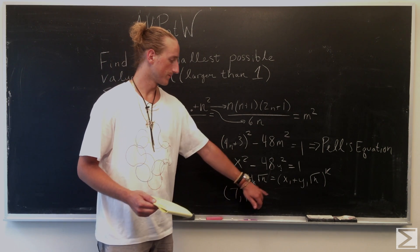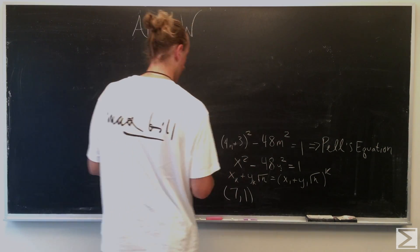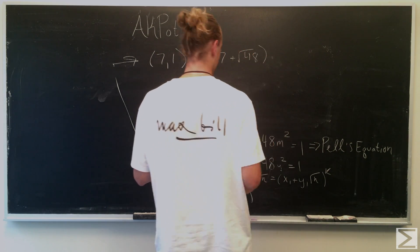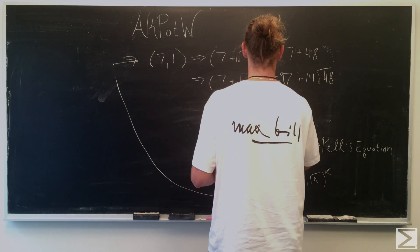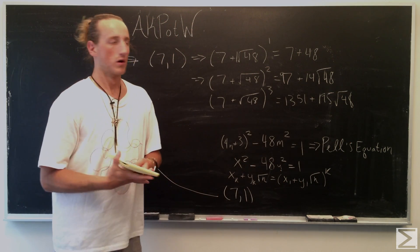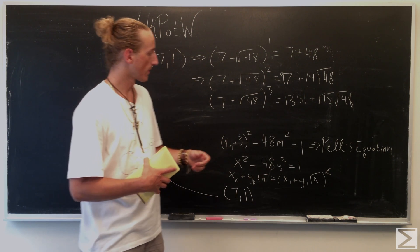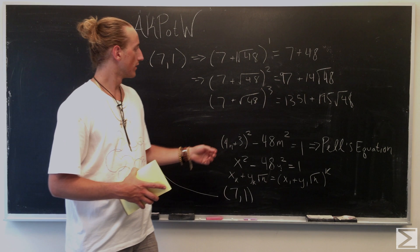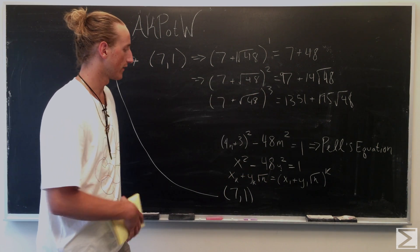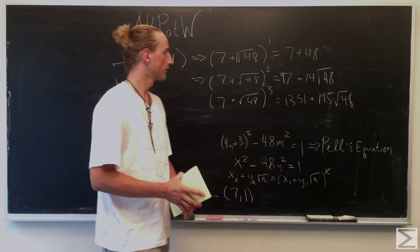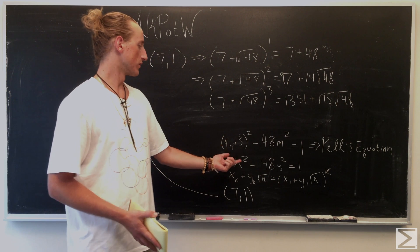Let's go ahead and look for the next few increments that Pell's Equation gives us. Using our fundamental solution (7, 1), we can find the second and third solution sets, which also satisfy x squared minus 48y squared equals 1. All of these will satisfy that equation based on our theorem. Looking at these three, we're trying to find one that's going to give us a perfect square in the original equation.